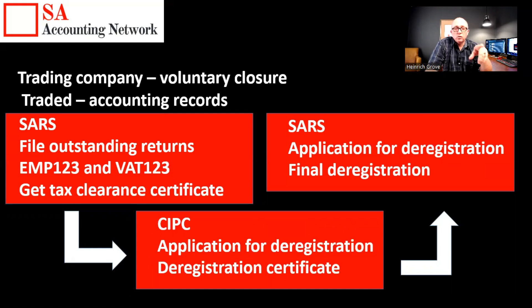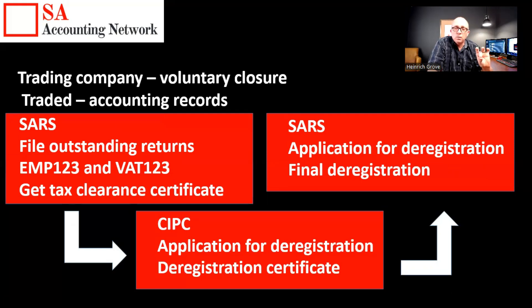If the company was registered for Pay As You Earn, there's a form called EMP123 that you need to complete — there's also an online functionality for this. For Value Added Tax, if your company was registered for VAT, you need to complete a VAT123 form and submit it to the receiver of revenue so they can deregister those two tax numbers. Remember there are three tax numbers: company tax, Pay As You Earn if you had employees, and Value Added Tax if your turnover was high enough. Get your tax clearance certificate, go to CIPC to apply for deregistration, six months later get your certificate, then go back to SARS for the final deregistration of the company tax number. The PAYE can be deregistered quite quickly, but company tax won't be deregistered until you have the deregistration certificate from CIPC.